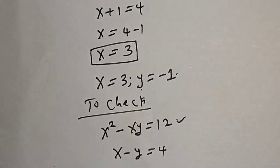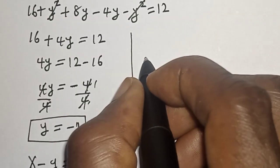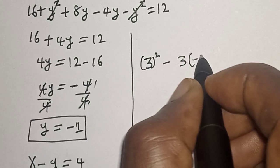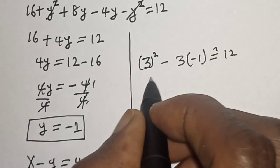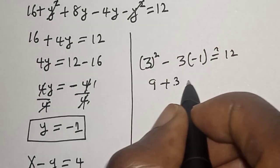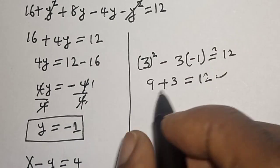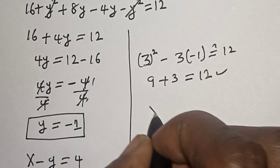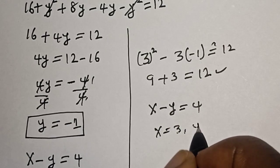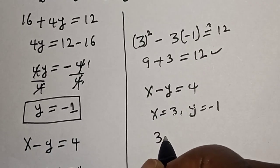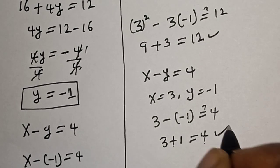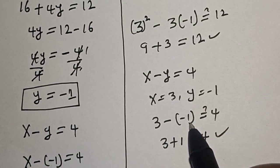Let's test the first equation: 3 squared minus 3 times (minus 1) must equal 12. That is 9 plus 3, which equals 12. Correct. For the second equation, when x is equal to 3 and y is equal to minus 1, we have 3 minus (minus 1) equals 3 plus 1, which is equal to 4. We satisfy both given equations with x equal to 3 and y equal to minus 1.